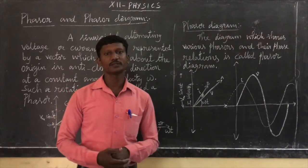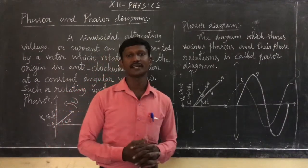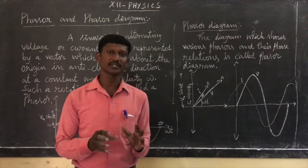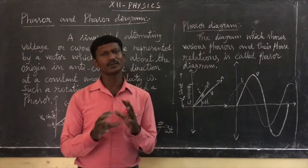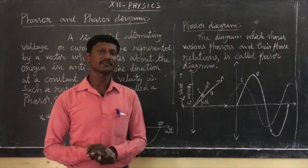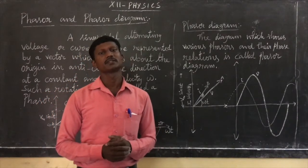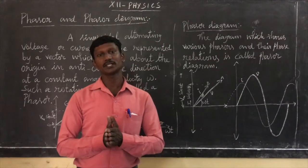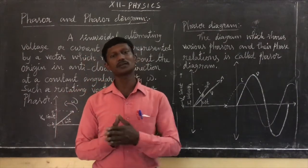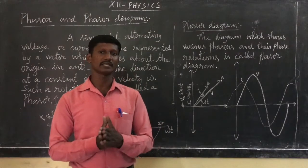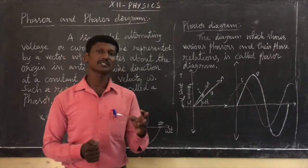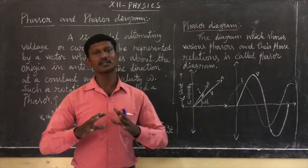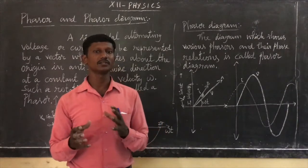Today we are going to discuss about phasors and phasor diagrams. It is a tool to analyze alternating voltage and current, and the relation between them. We will look at the alternate voltage, the mean value of the alternate voltage, that is AC — the alternating current or the alternating voltage — and the average value of AC.